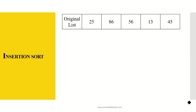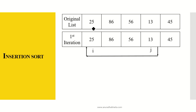When we start comparing, we compare 25 with 86 — 25 is less than 86, so there's no exchange. Then j is incremented; from 86 I move my counter to 56. I compare 25 with 56 — there will not be any exchange, as I'm arranging elements from smallest to largest. Now my pointer is at 13.